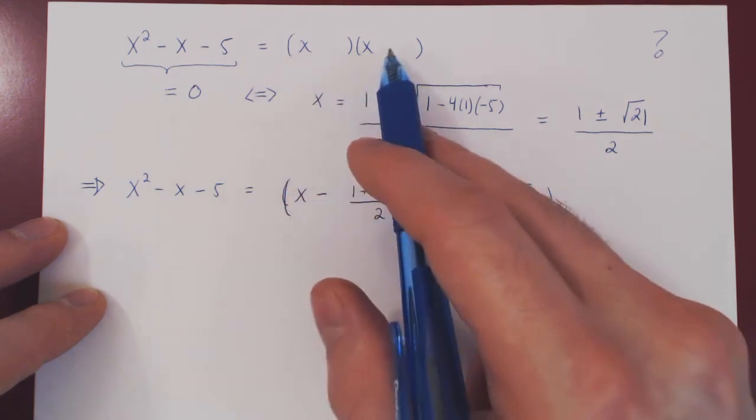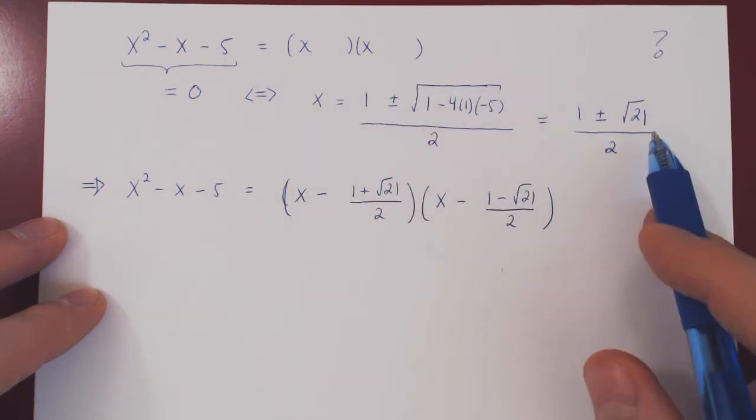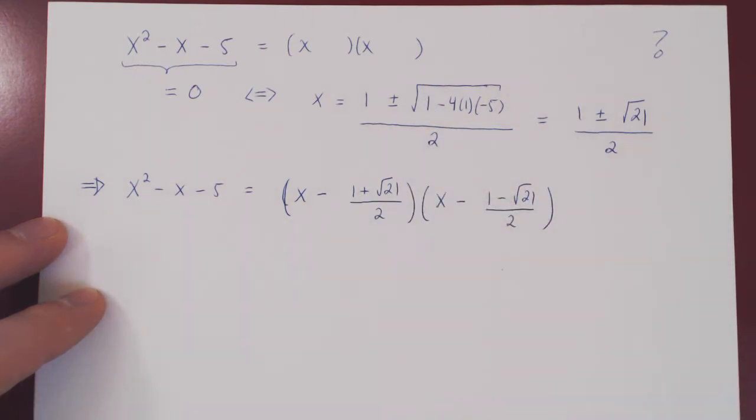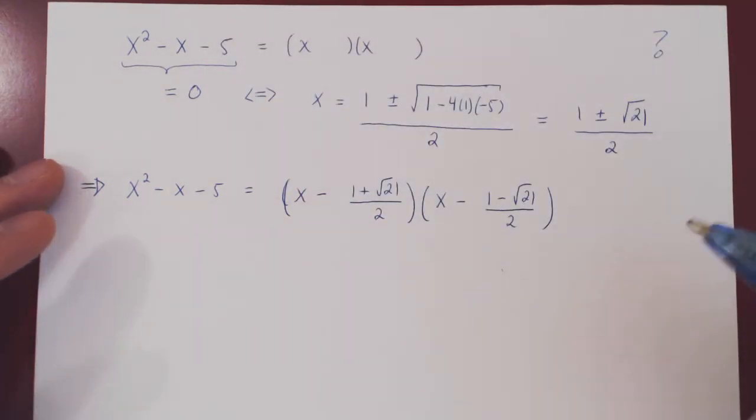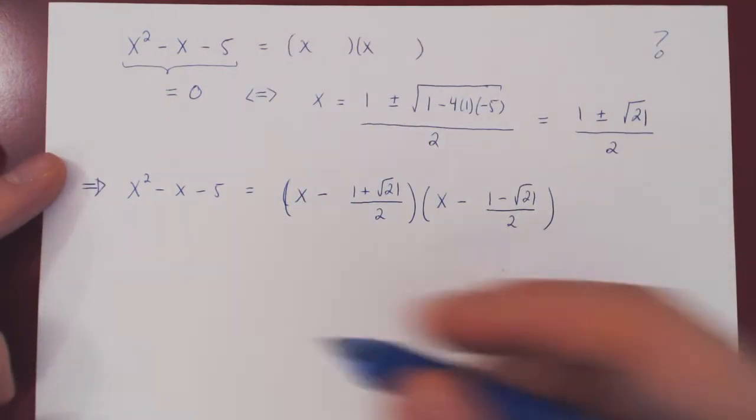We tried to factor by inspection. We couldn't find the two real numbers, so we fell back on the quadratic formula. Let's look at one more example. We'll change the negative 5 for a positive 5. See if something different happens.